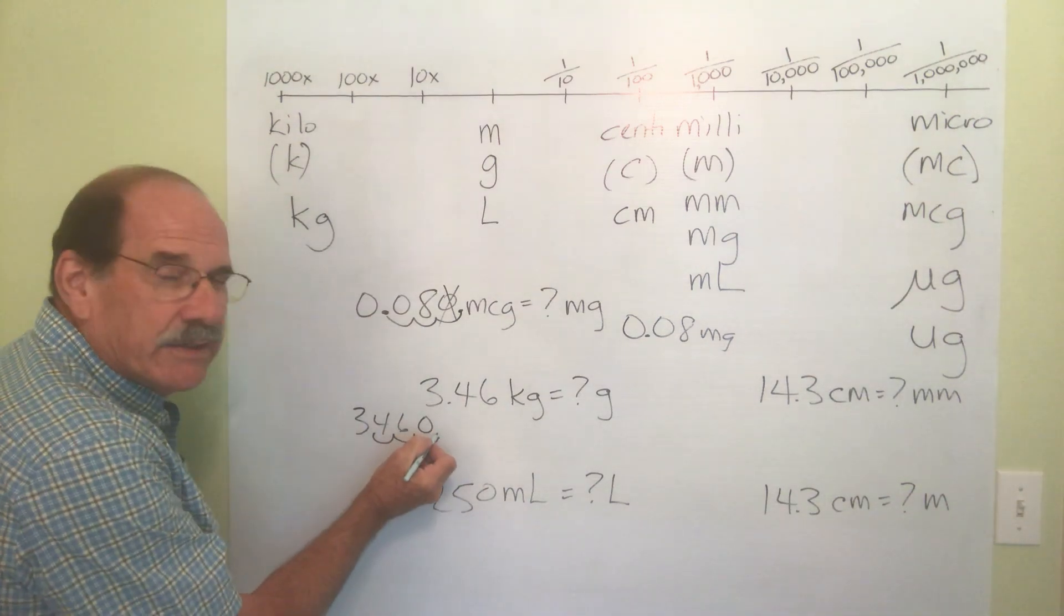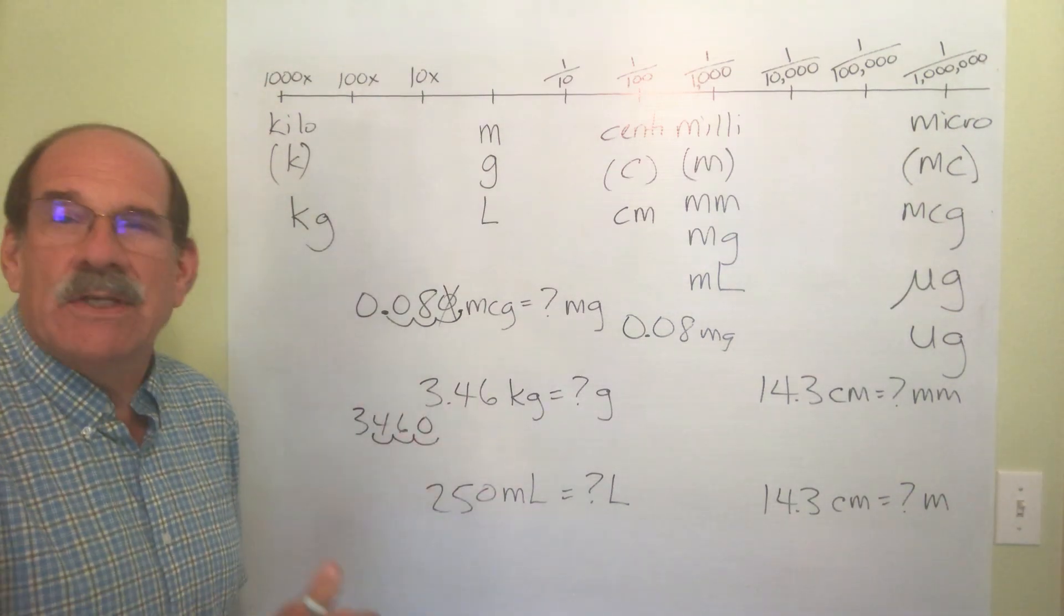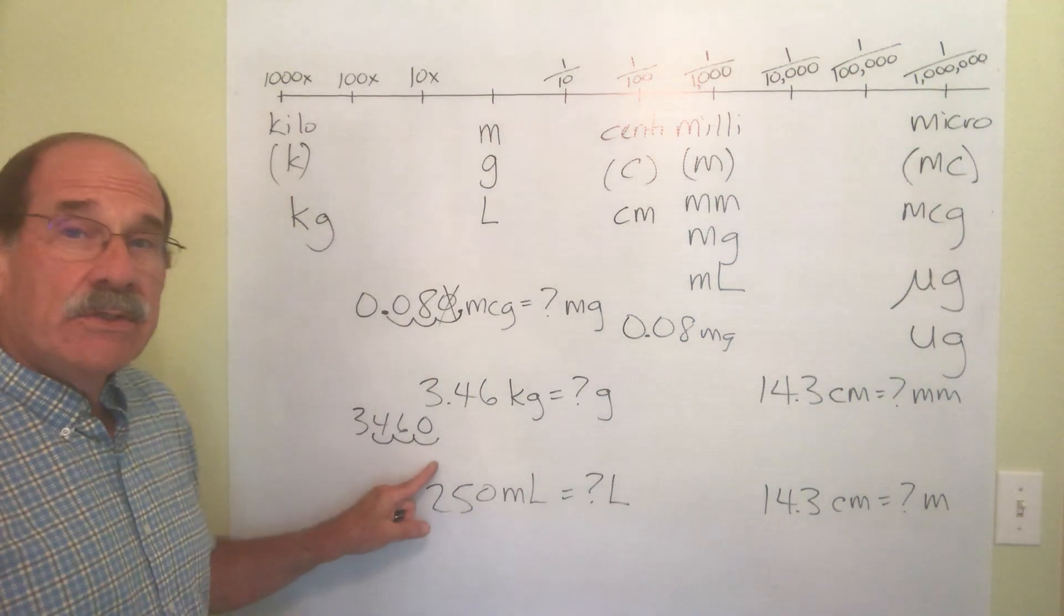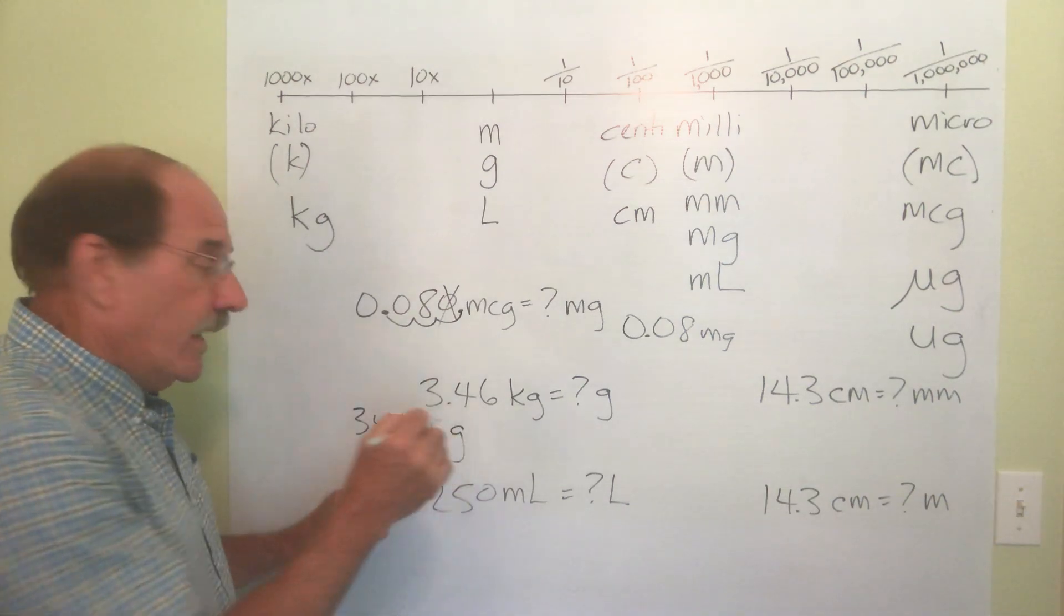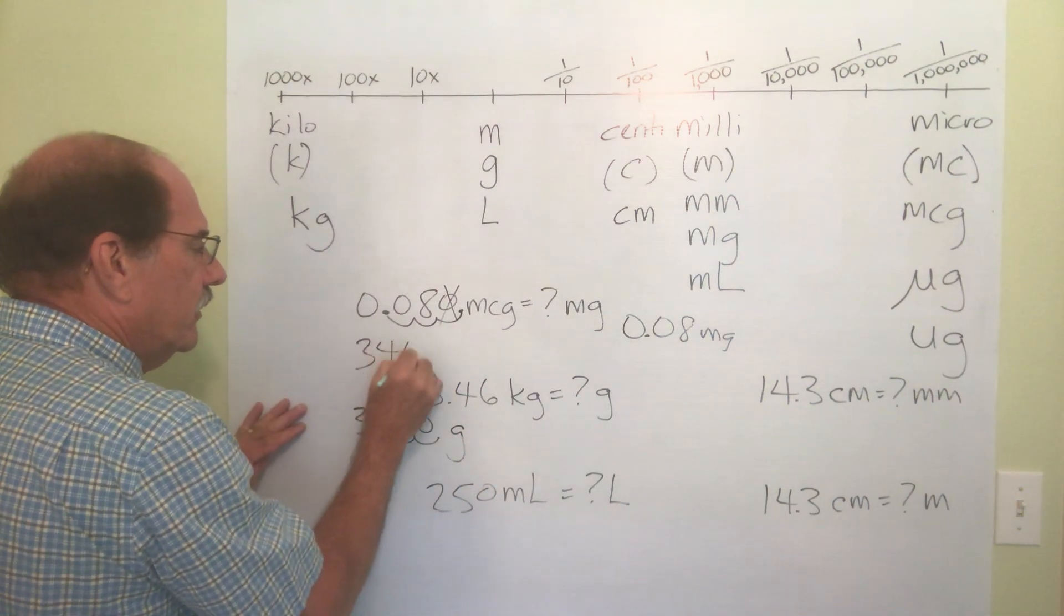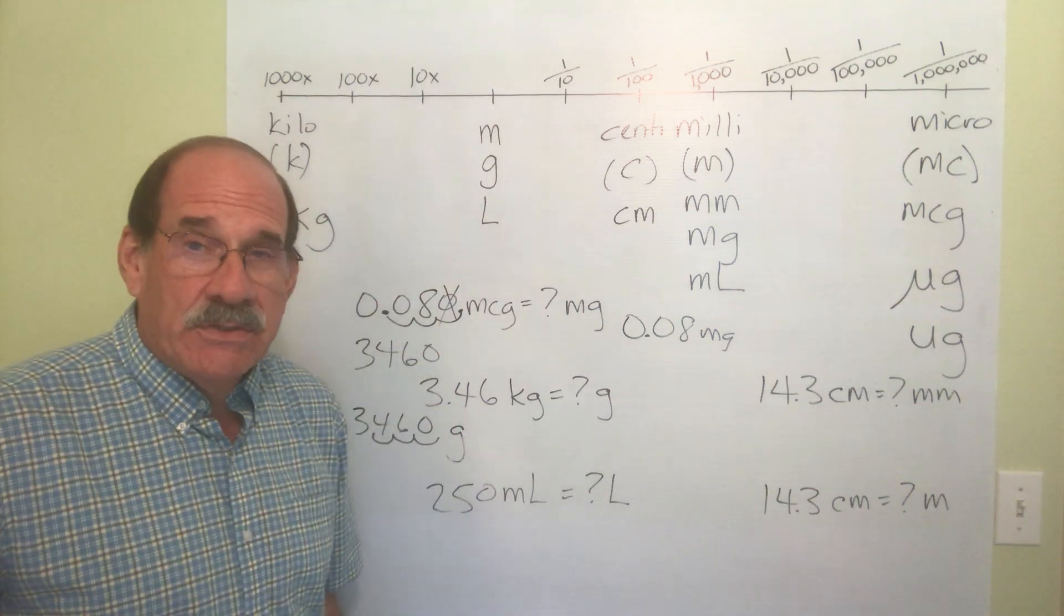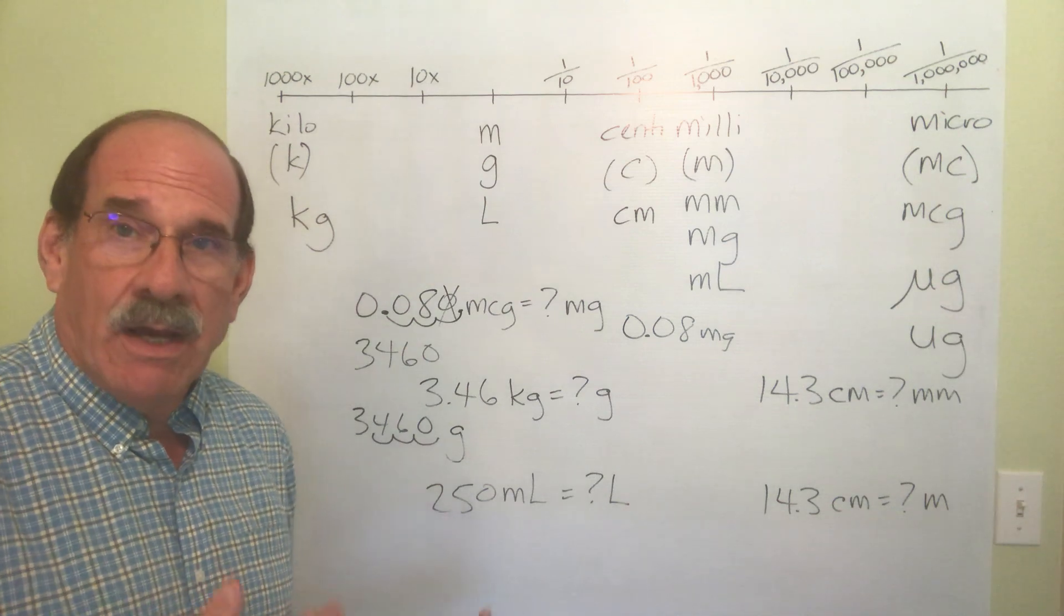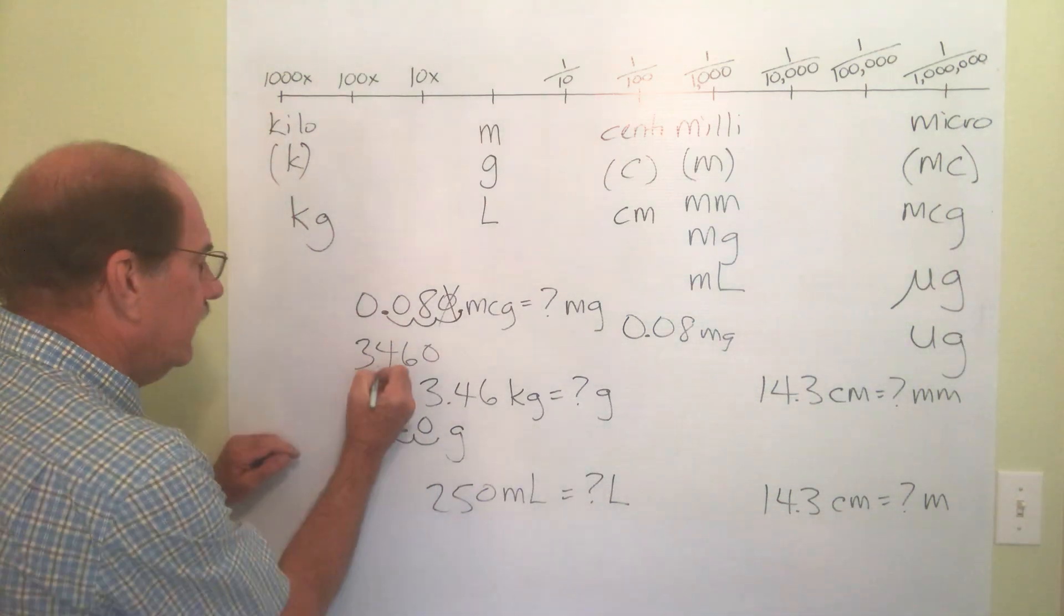The dot ends up right there. Of course, I don't put the dot there because it's a whole number. What's my number? 3,460 grams. As I said earlier, 3,460. Any number that's 1,000 or more, to make it easier to read, you should put a comma where the commas go. Right there.